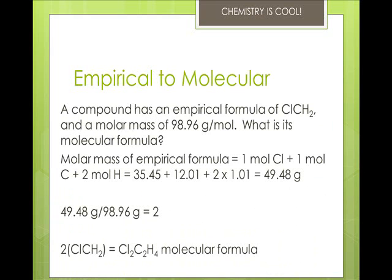Okay, let's take a look at this one. A compound has an empirical formula of ClCH2 and a molar mass of 98.96 grams per mole. What is its molecular formula? So here, we're not actually assuming any mass. You want to find the actual molar mass by the mass of 1 mole of the empirical formula. So you'll get a whole number, and then you multiply the empirical formula by that number to get the molecular formula.